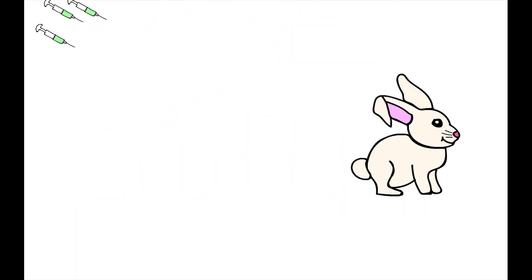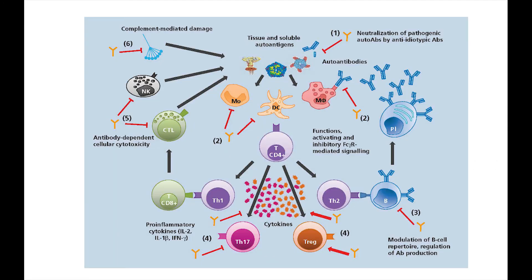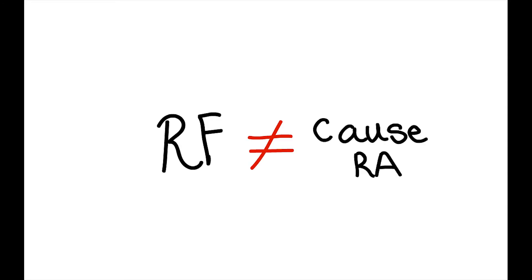They gave rabbits repeated inoculations of formalin-fixed bacteria, which led to a detectable RF level in serum. This experiment suggested that RFs were present in the normal immune system, and there could be significant levels of RF in serum without arthritis.